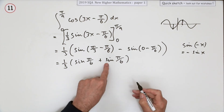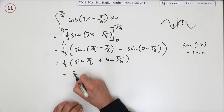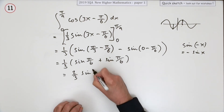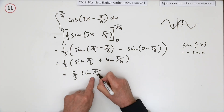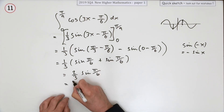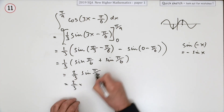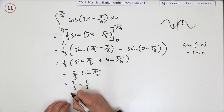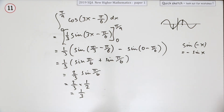That means you've got two of these, so you have two thirds of sine(π/6). π/6 is 30°, and sine of 30° is a half. So the final answer is one third.